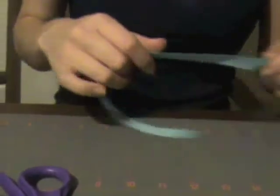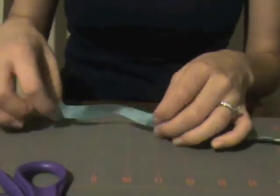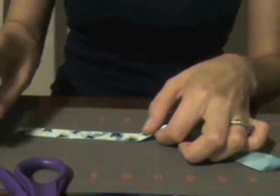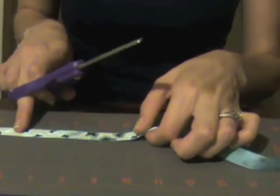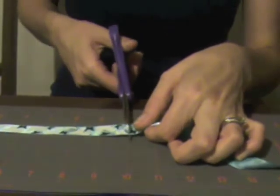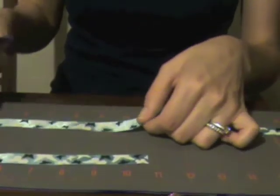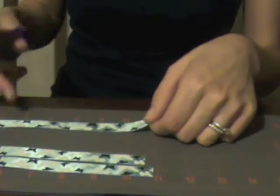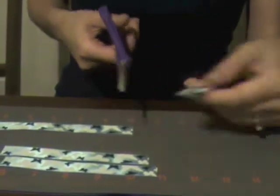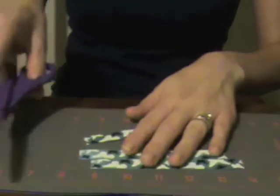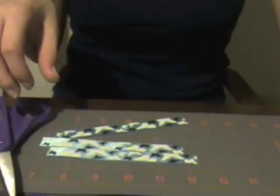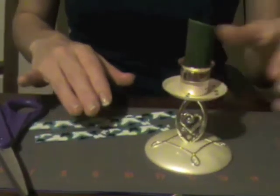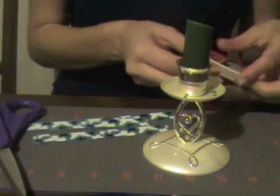So the first thing you want to do is cut your piece of ribbon into strips that are 5 inches long. I'm going to heat seal the edges very quickly.